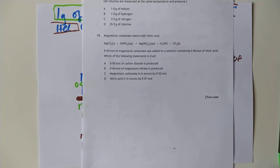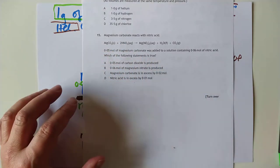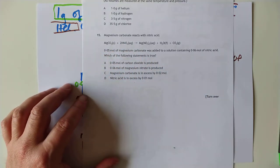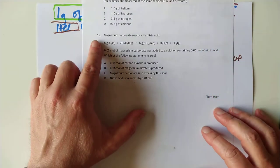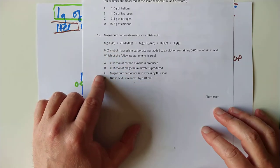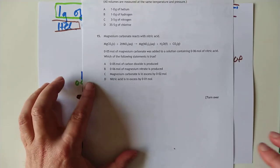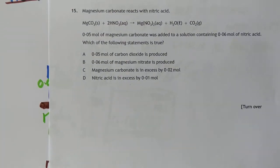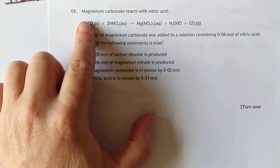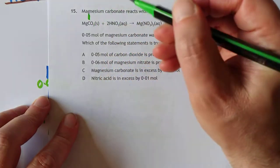I'll throw in a living nightmare of a multiple choice question based on excess calculations — the worst case scenario I've seen, to be honest. This is a ridiculous amount of work for one mark, and as a demonstration of exam technique, there is no way you should be tackling this first. Skip it, come back at the end when you have more time. So: magnesium carbonate reacts with nitric acid. They've given you the balanced equation — it is one to two.